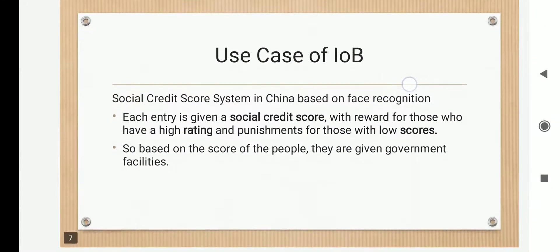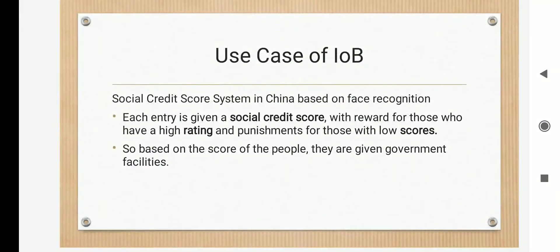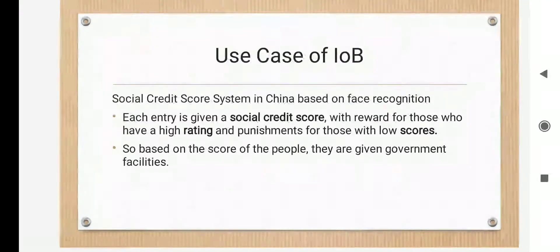An example of IOB being used is in China, where there is a famous credit score system. It recognizes a face and determines the good and bad deeds done by an individual. This finally determines a score for that particular individual, which is used later for availing government facilities or benefits. It is based on behavior patterns — what all things that person has done — and based on that score, the government gives benefits or punishments for the good and bad deeds done. This is a use case of IOB.